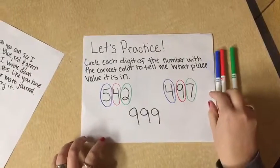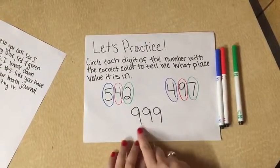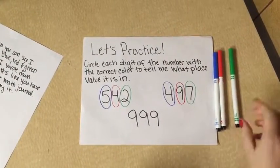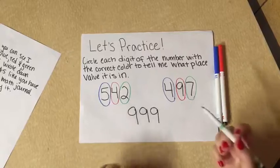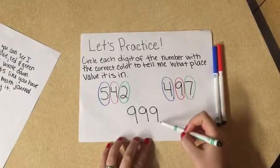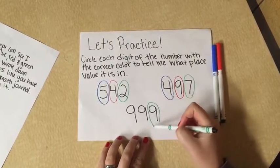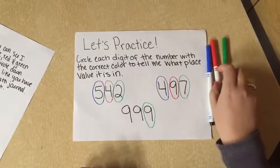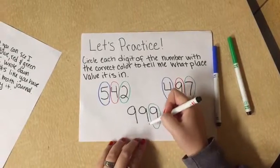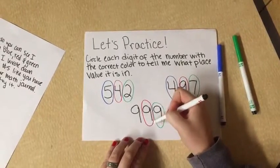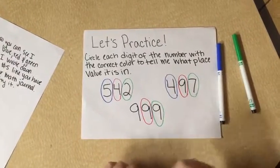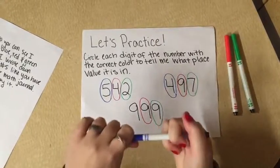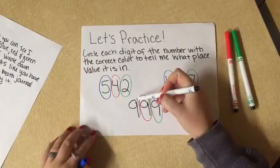Alright, now our last number is pretty cool looking. We have 999. So we're going to do the same thing again. We're going to take the green marker, starting with the ones place, and I'll circle my 9. Then moving on to the tens place, take my red, and circle the 9. And our last number for this worksheet — using the blue for my hundreds place, I'll circle the 9.